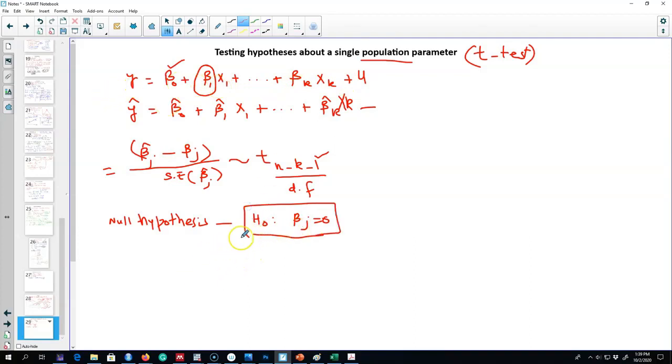As an example of the wage equation we were using earlier, if we hypothesize that beta 2 has no impact on wages, that is, if we control for tenure and education, after controlling for these two factors, experience has no impact on wages.